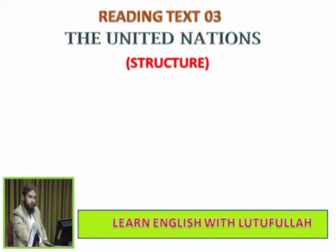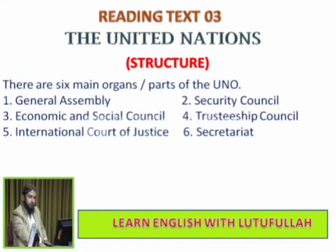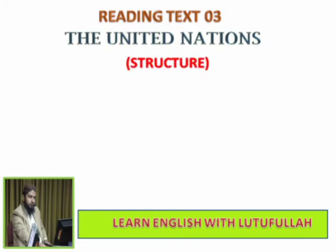Ab hum United Nations ki structure ke baare mein jaanenge. There are six main organs or parts of the UNO: Number 1 General Assembly, Number 2 Security Council, Number 3 Economic and Social Council, Number 4 Trusteeship Council, Number 5 International Court of Justice, Number 6 Secretariat.